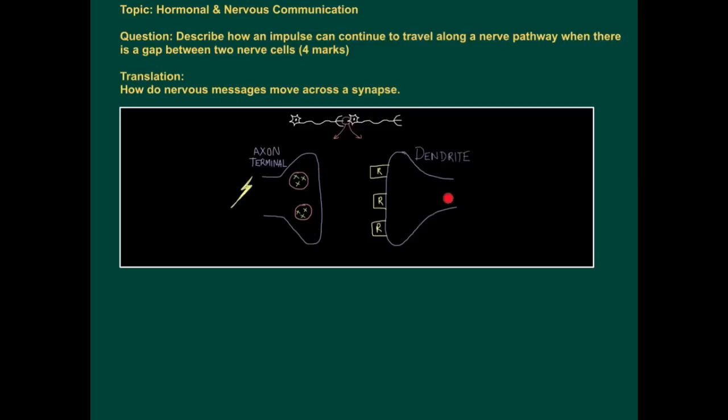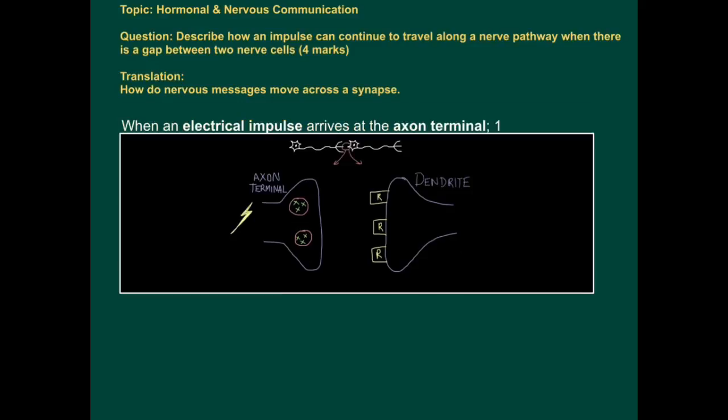So here's a nerve cell, here's another nerve cell and there's a gap in between. This gap is called a synapse and really what this question is asking is how do nervous messages move across a synapse.